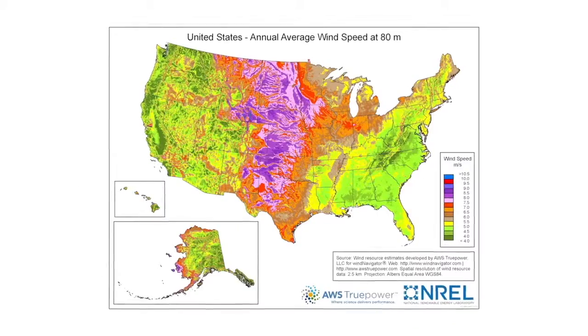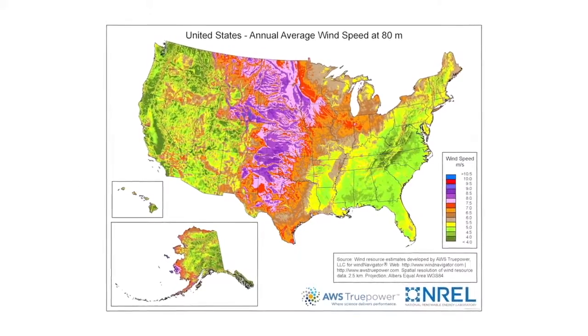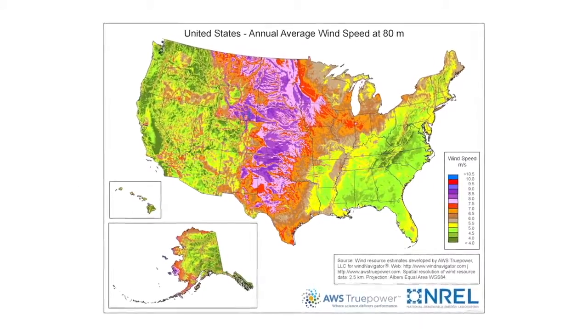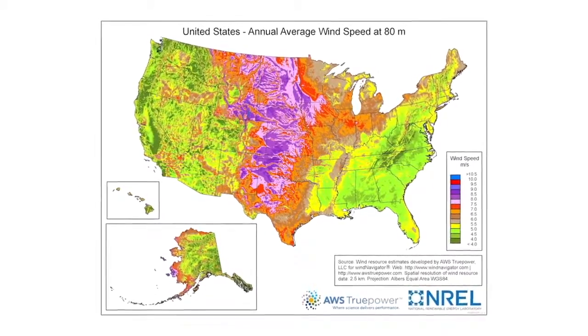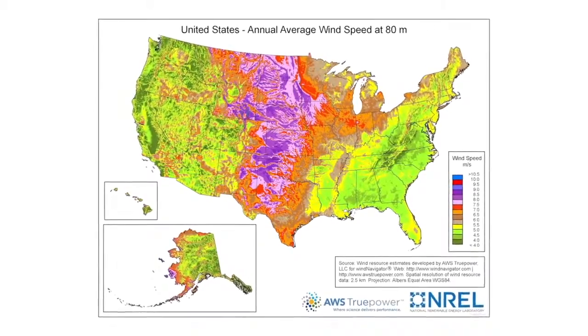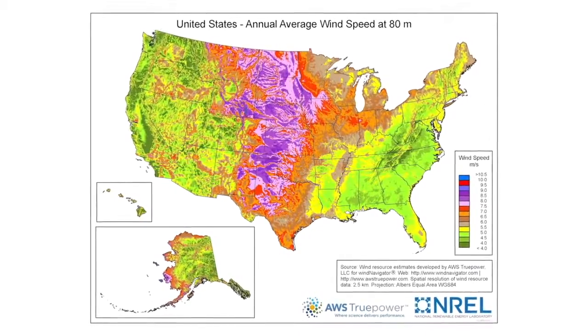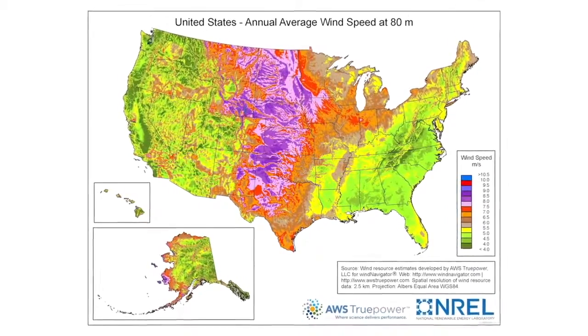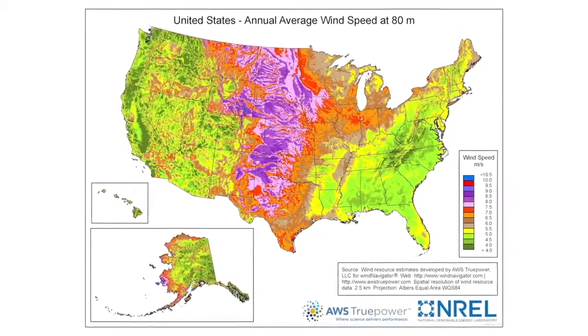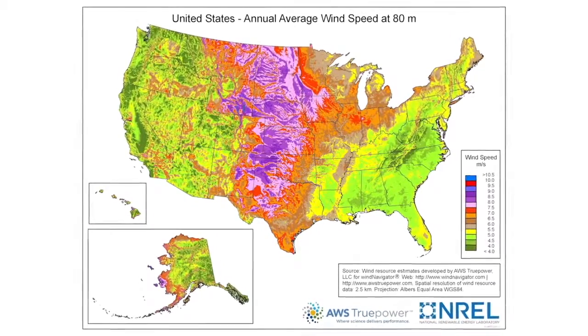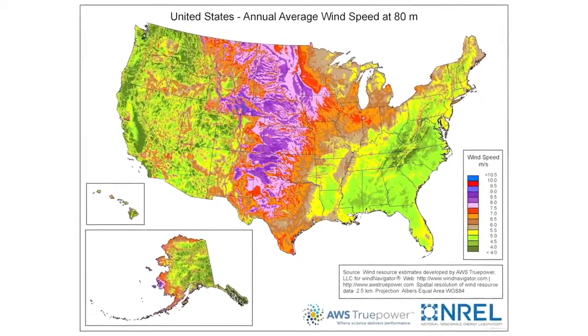Further, use of wind power is limited geographically, as this map of the U.S. shows. The areas in green are, in general, poor locations for wind farms, and that accounts for a huge swath of the U.S.A.